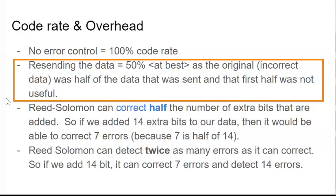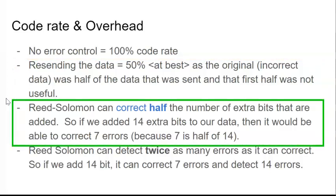We also have some additional code so that the error can be detected. Reed Solomon can correct half the number of extra bits that have been added. So, if we were to add 14 additional bits, we could correct 7 errors.